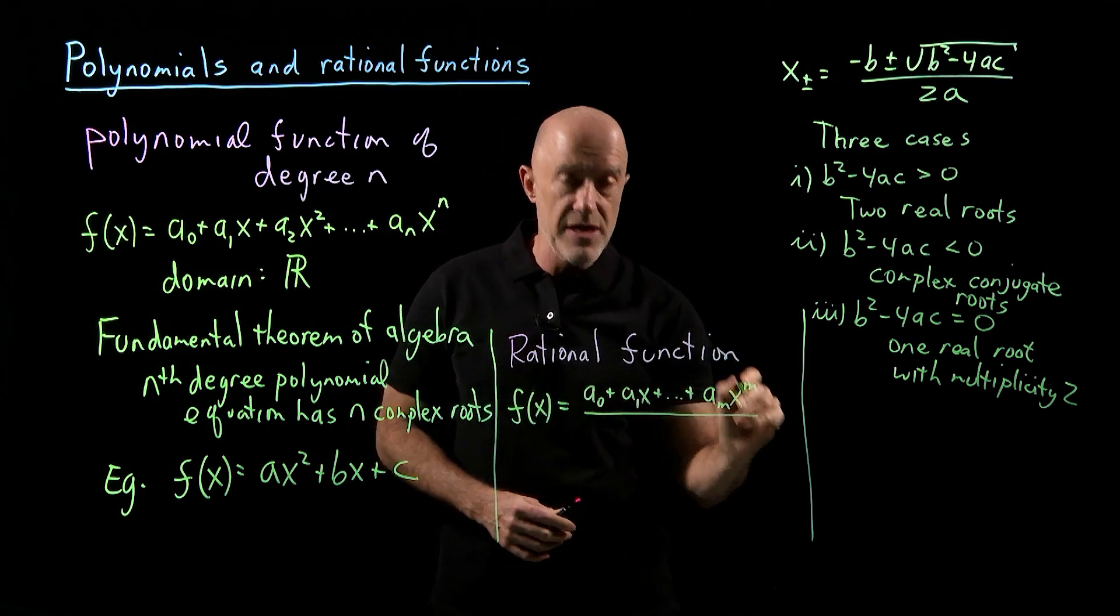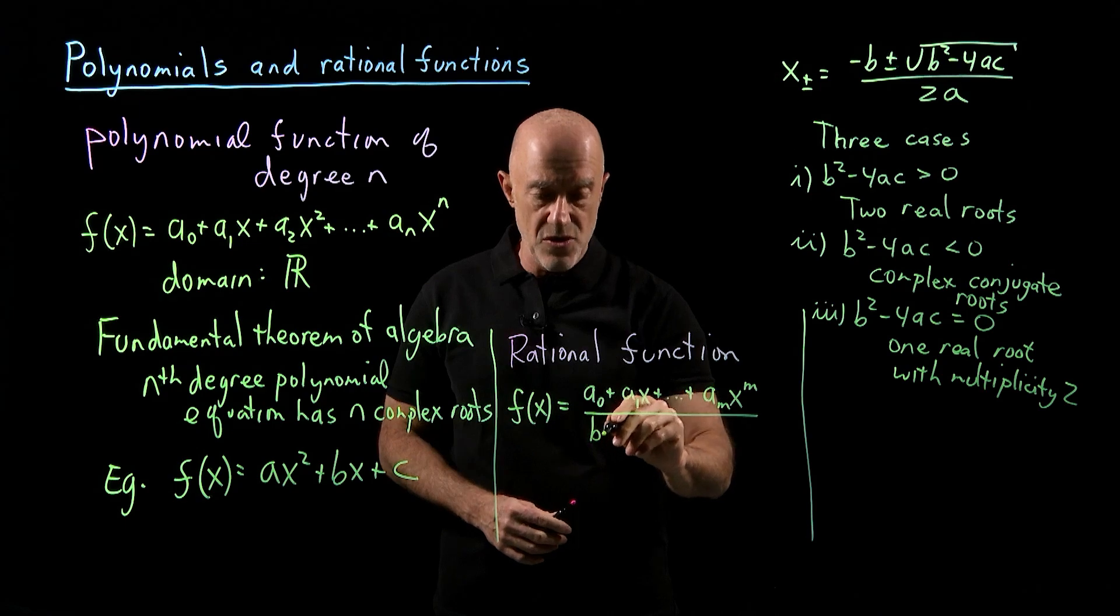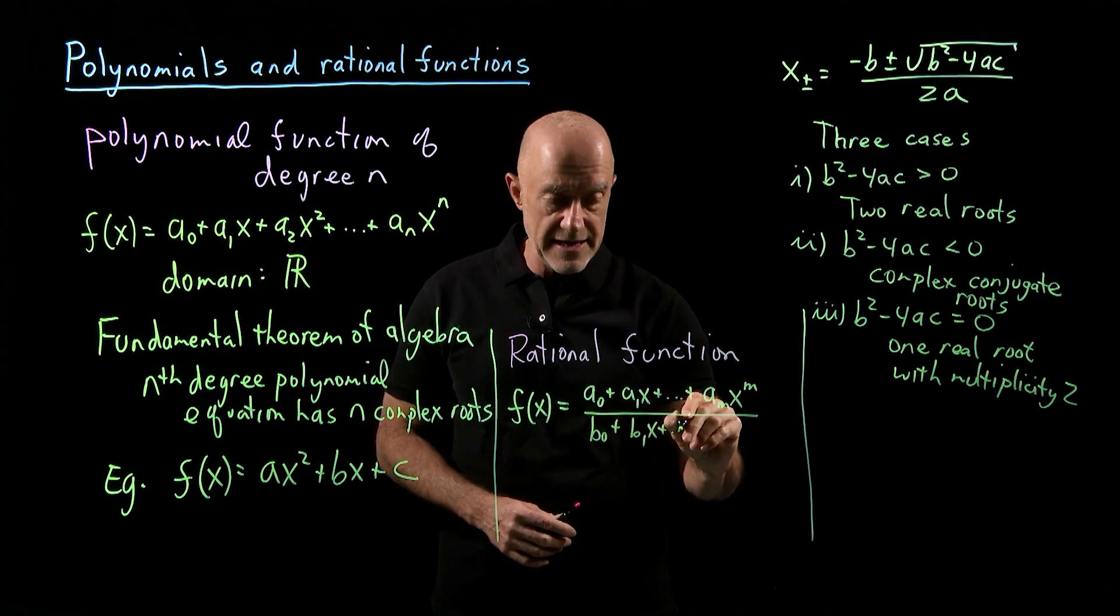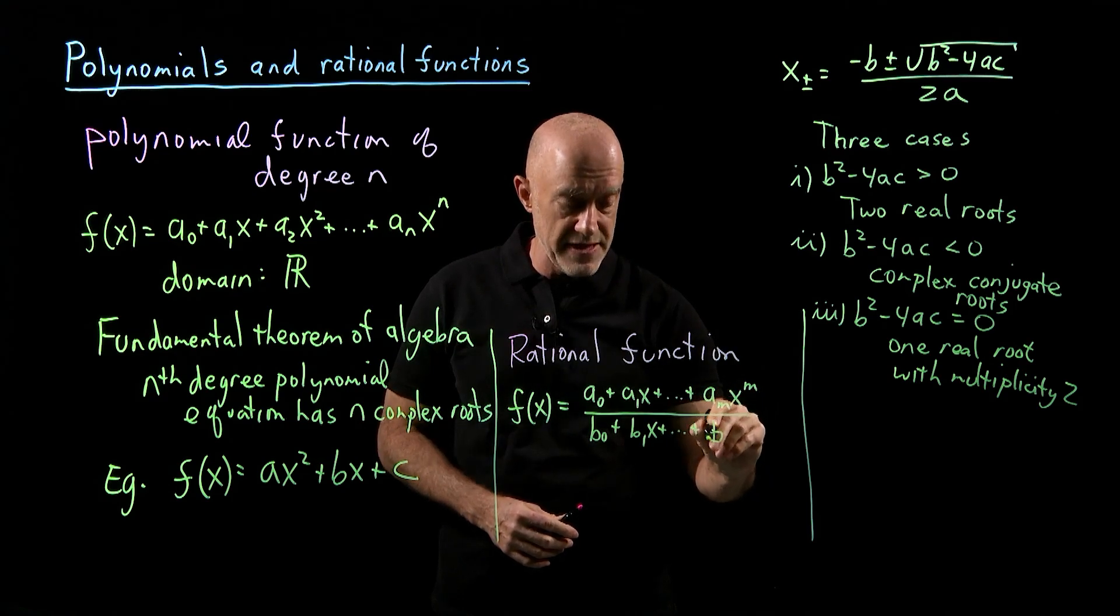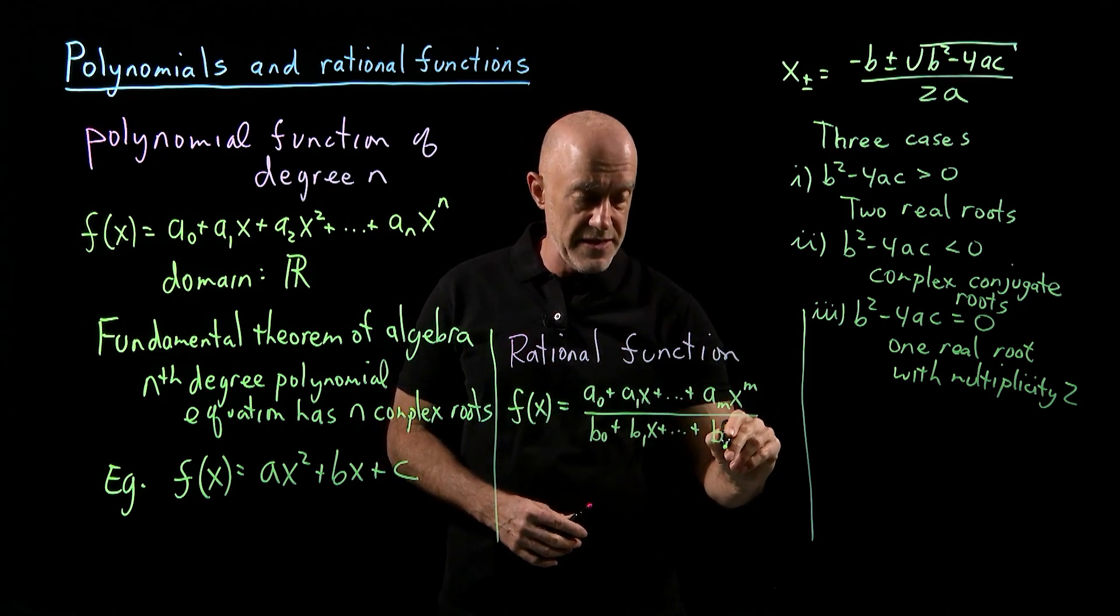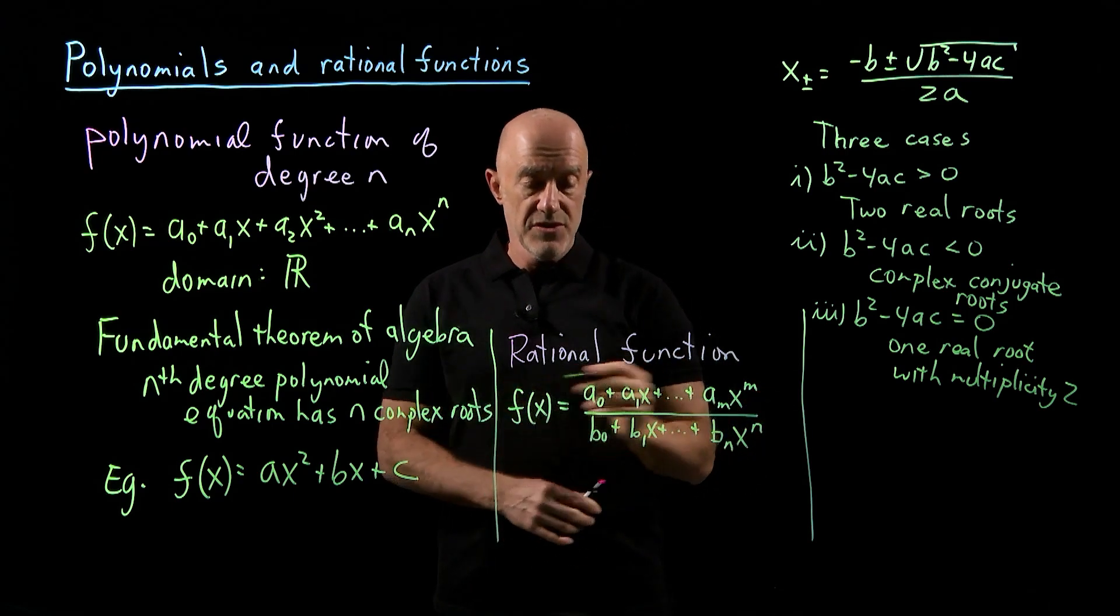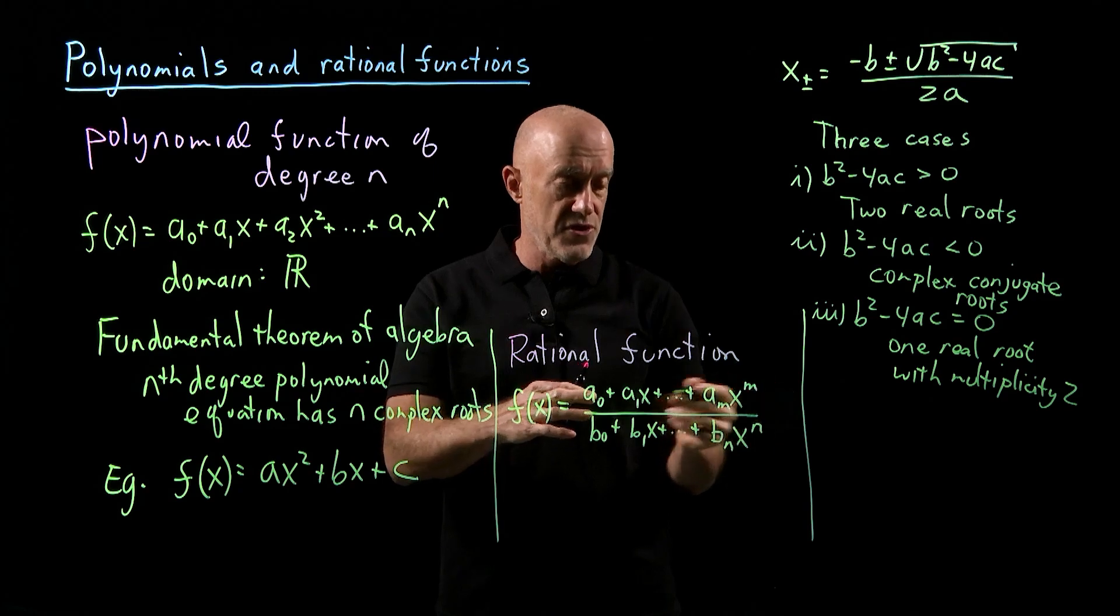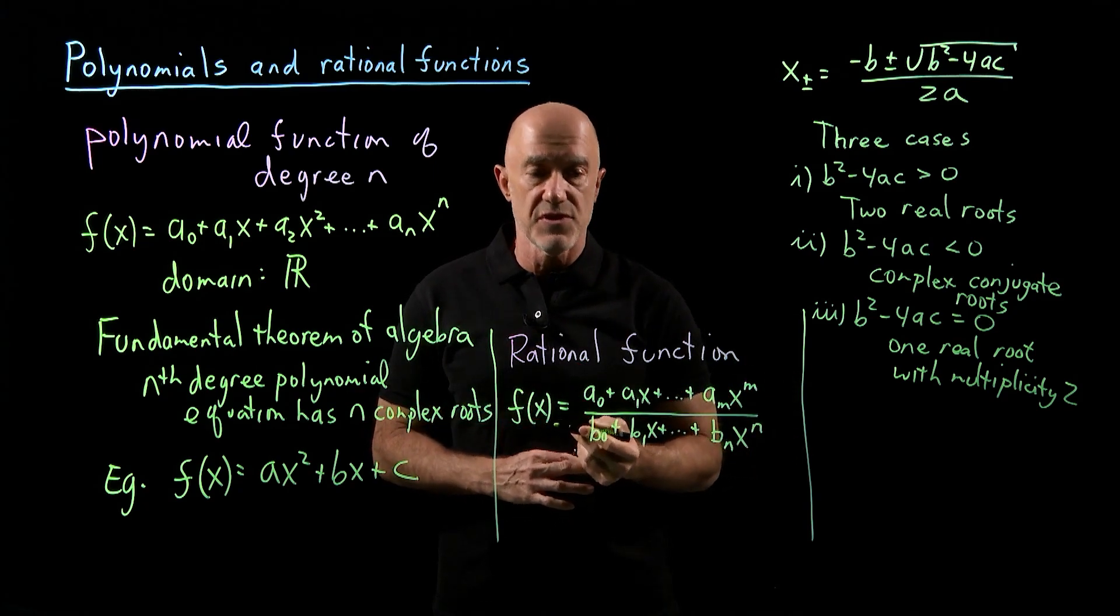And the denominator is also a polynomial. We could write it as b₀ plus b₁x plus ... plus bₙxⁿ. The order of the polynomial can be different. So the numerator is a polynomial of degree m, and the denominator is a polynomial of degree n.